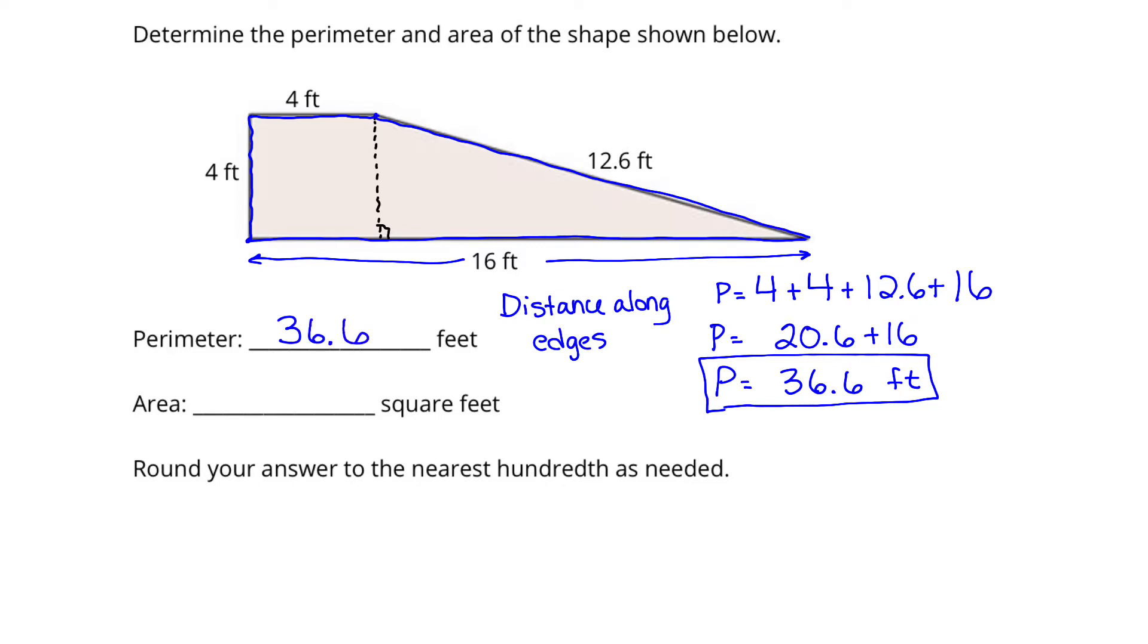Now we get to move on and look at the area. So the area of this composite figure takes a little bit more work. We first notice that the composite figure is comprised of two smaller shapes. And so rather than getting the area for the whole thing at once, I want to get the area of the two smaller shapes and add those together.